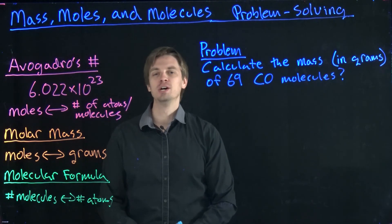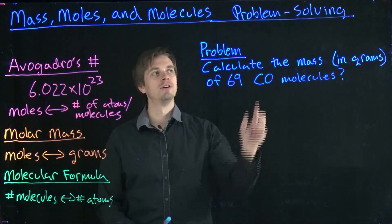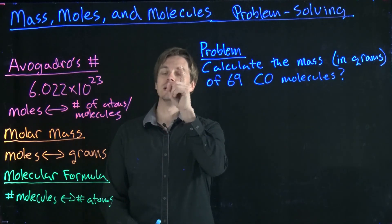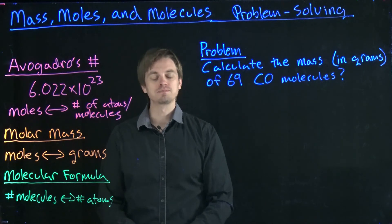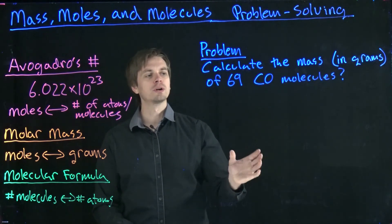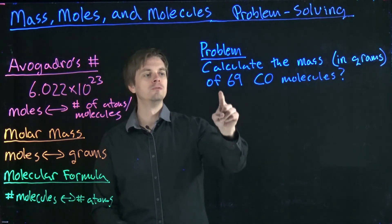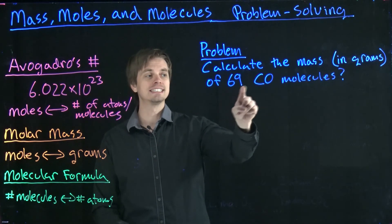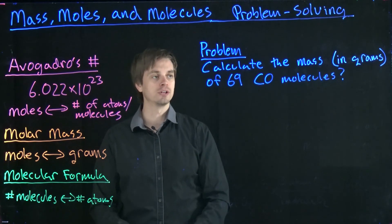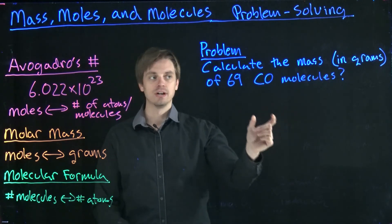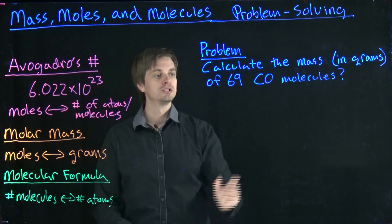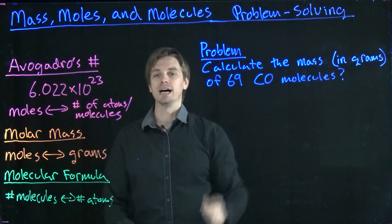Welcome back to the fifth video in the mini-series on developing problem-solving strategies for using mass, moles, and molecules conversion factors. In this video, we're going to look at a problem that requires us to move from individual numbers of atoms, in this case 69 carbon monoxide molecules, to the mass of this relatively small quantity of carbon monoxide molecules. So we need to go from number of atoms to mass.